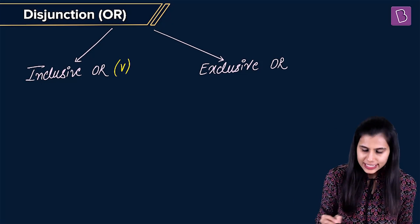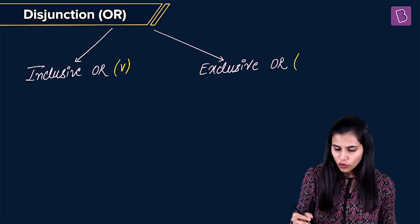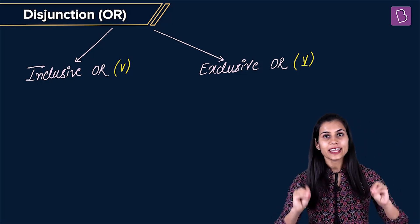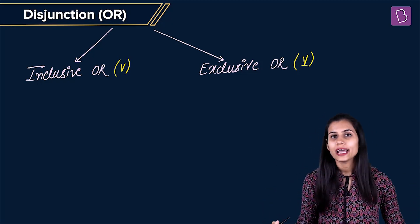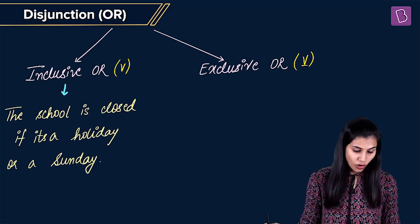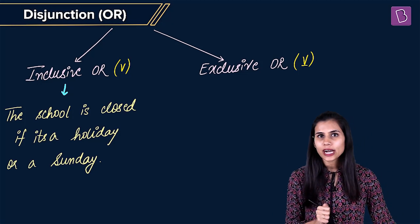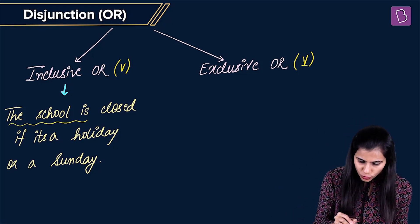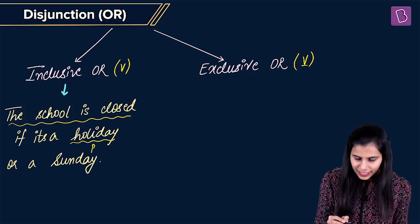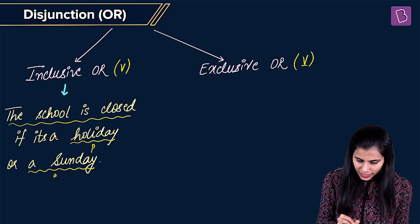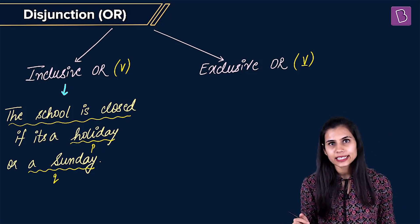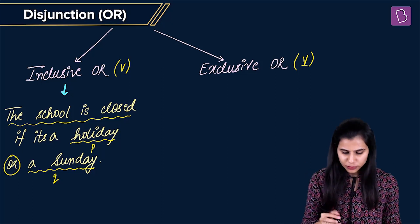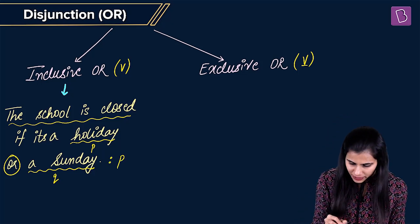The symbol for inclusive OR is the inverted partial A (∨), and the symbol for exclusive OR is the same symbol with a little dash underneath. To understand their meaning, consider this example: 'The school is closed if it is a holiday or a Sunday.' This is a compound statement formed with two simple statements P and Q, where P is 'the school is closed on a holiday.' Both simple statements combine with the connective OR to give this disjunction of P and Q, written as P ∨ Q.